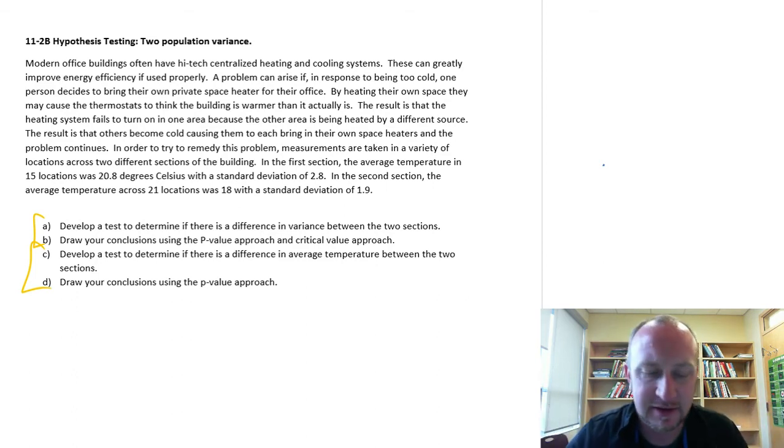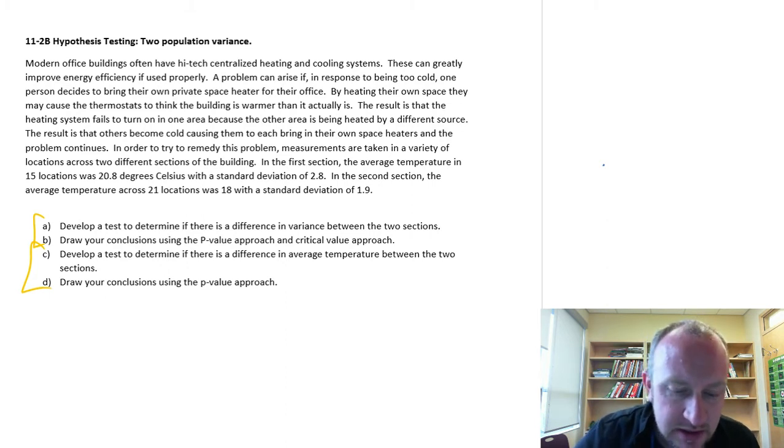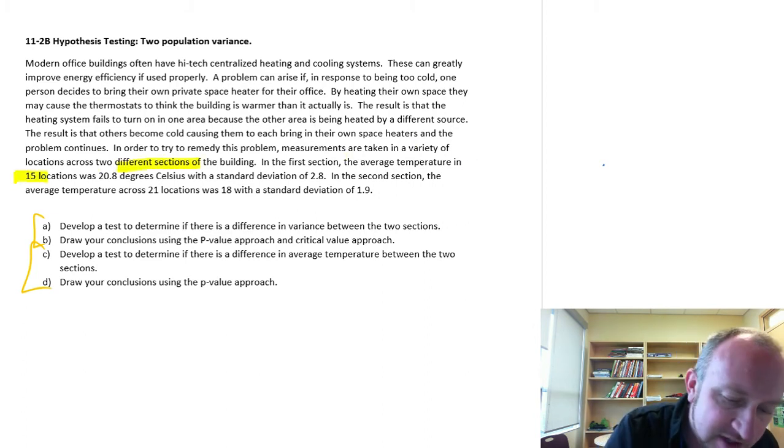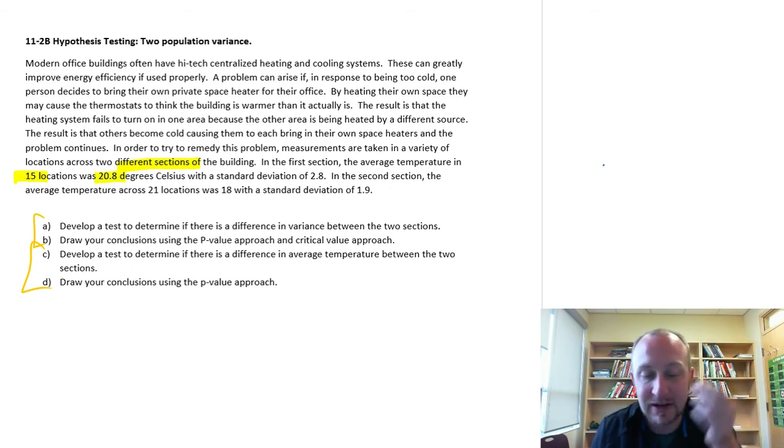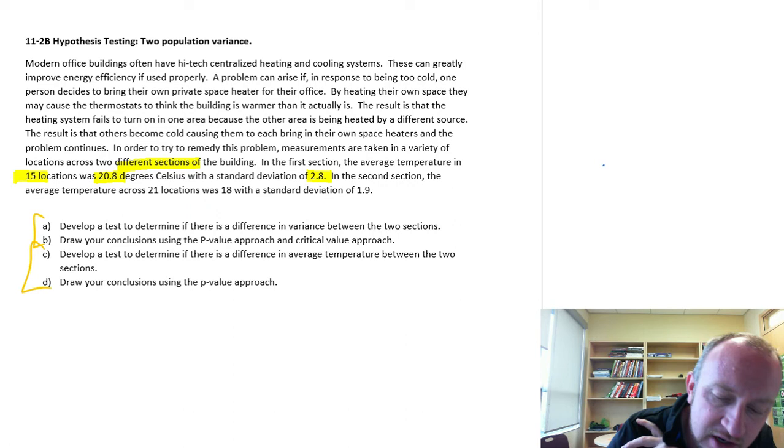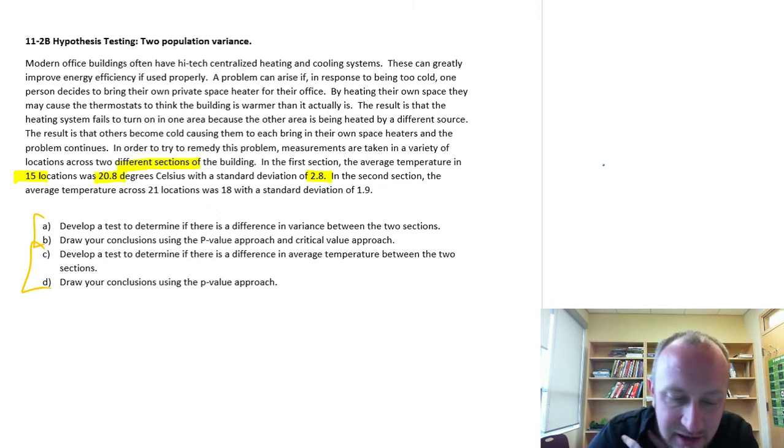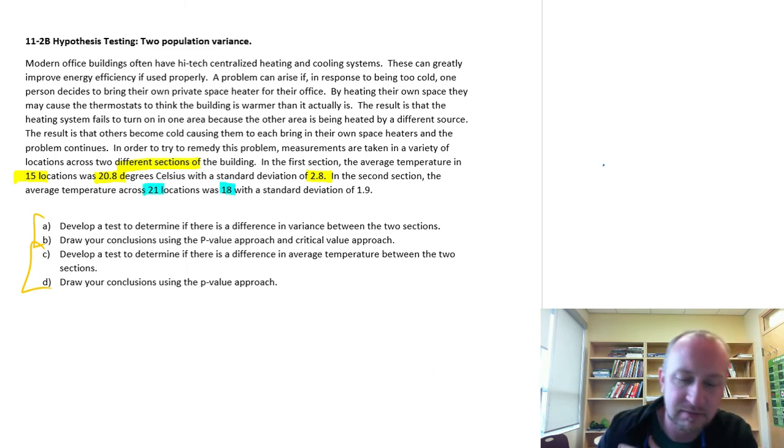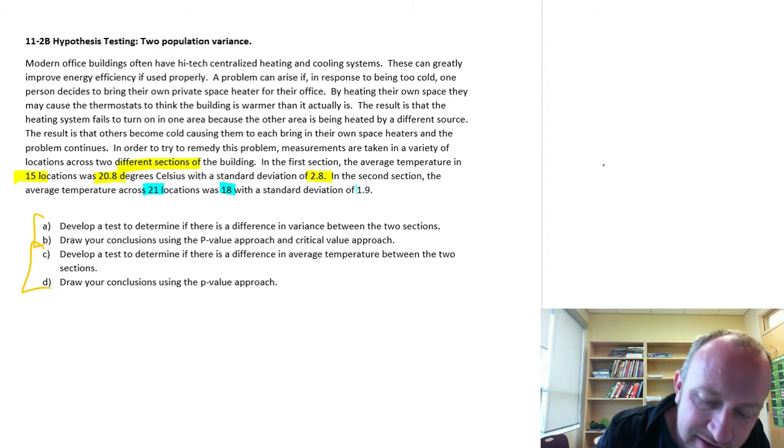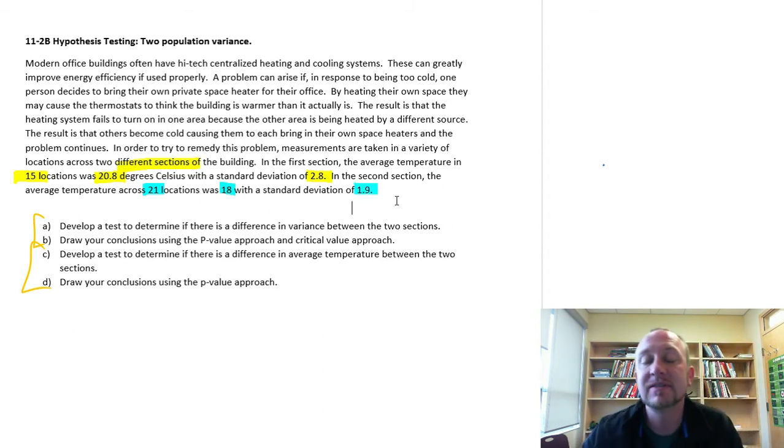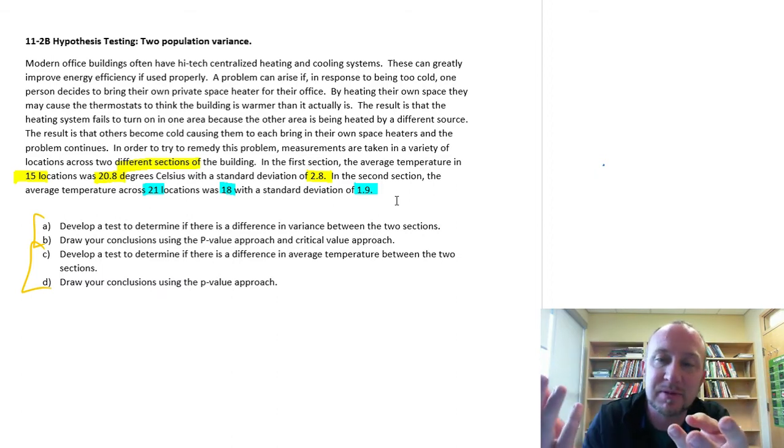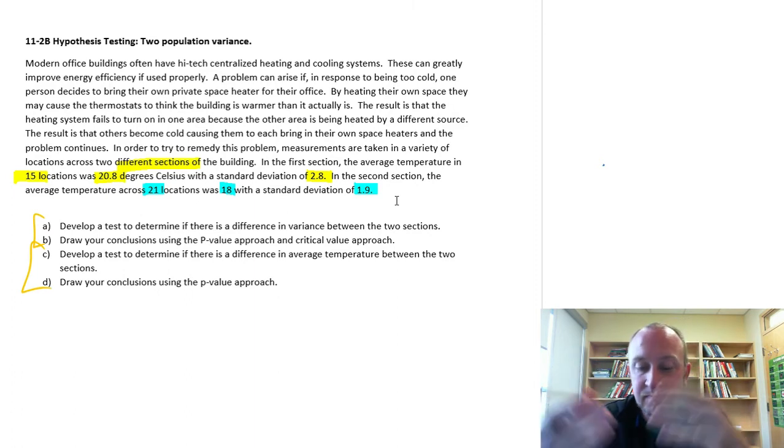Now let's get into some statistics. In the first section, we're taking measurements in two different sections of the building. In the first section, the average temperature across 15 locations was 20.8 degrees Celsius with a standard deviation of 2.8. In the second location, the average temperature across 21 locations was 18 degrees Celsius with a standard deviation of 1.9. So here we have these two sample distributions with a sample mean and standard deviation of each.